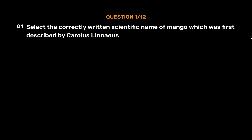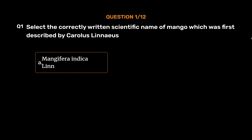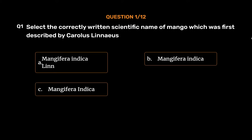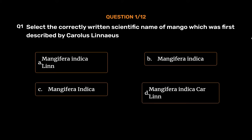Question No. 1. Select the correctly written scientific name of mango which was first described by Carolus Linnaeus. Option A: Mangifera indica L. Option B: Mangifera indica. Option C: Mangifera indica. Option D: Mangifera indica carlin.